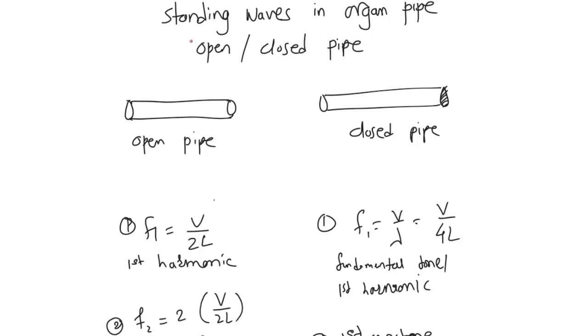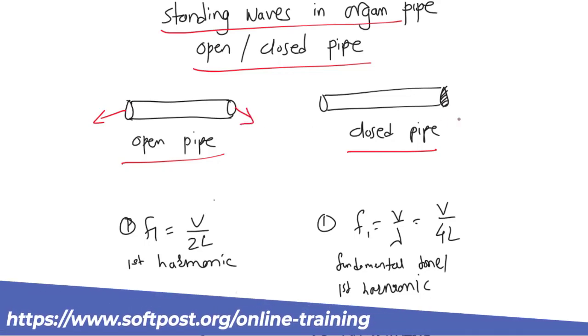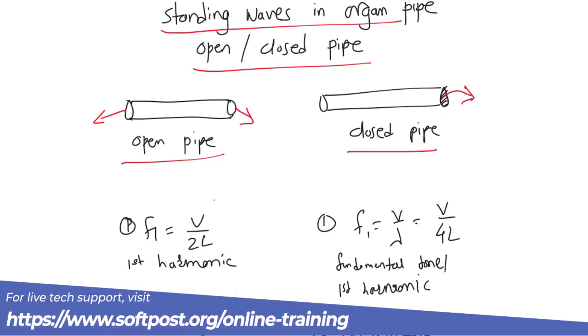In this video, we will talk about standing waves in organ pipe. There are two types of organ pipes: open and closed. This pipe is open from both ends, and this one is closed at one end.